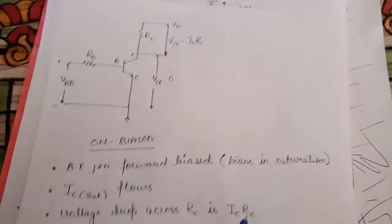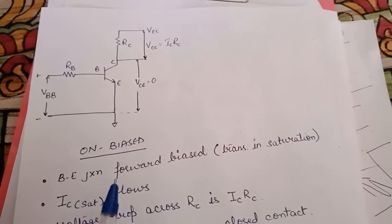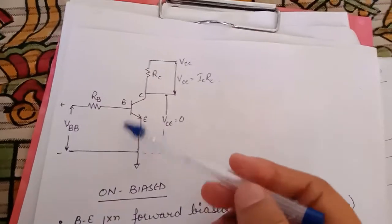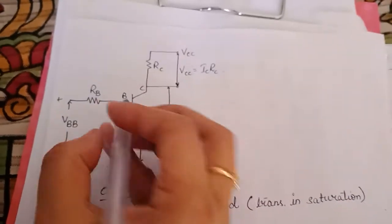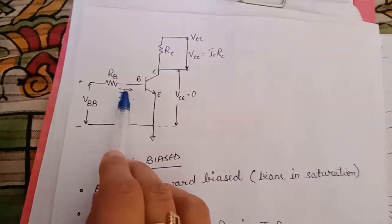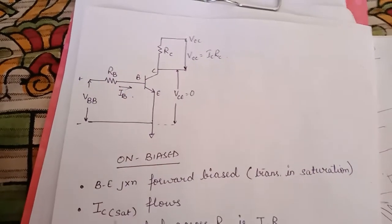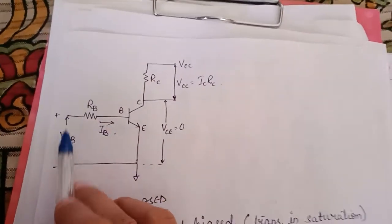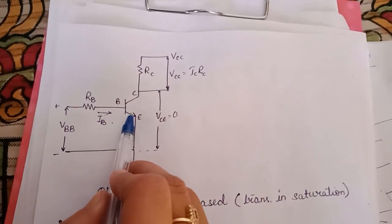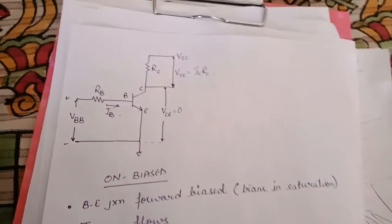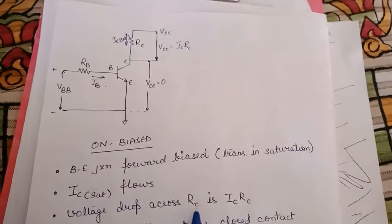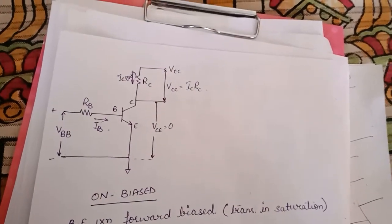Next, when the transistor is in the saturation region: for making the transistor operate in saturation, the input is forward biased. When the input is forward biased, base current IB will flow — the base-emitter junction is forward biased. As we increase the voltage, a point is reached where the transistor goes into the saturation region. When the transistor is in saturation, the saturation current IC(sat) flows through RC.